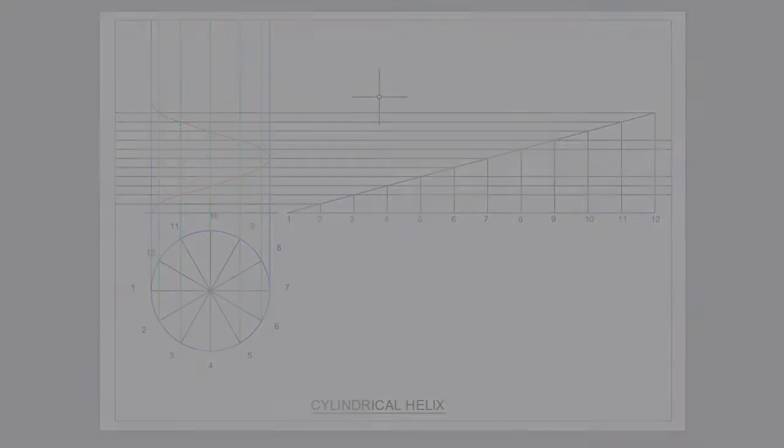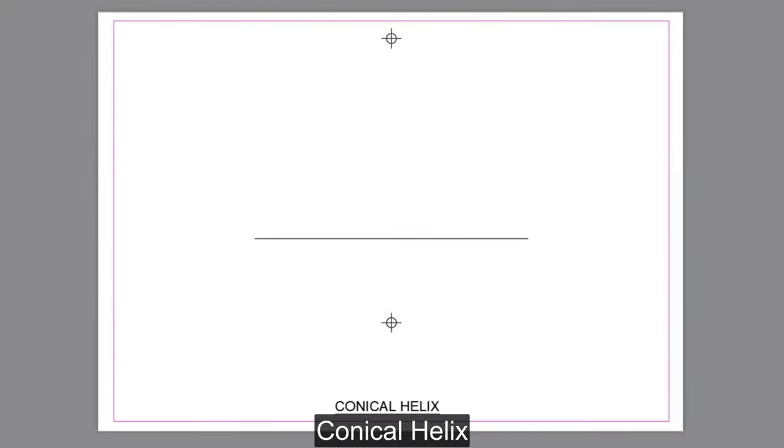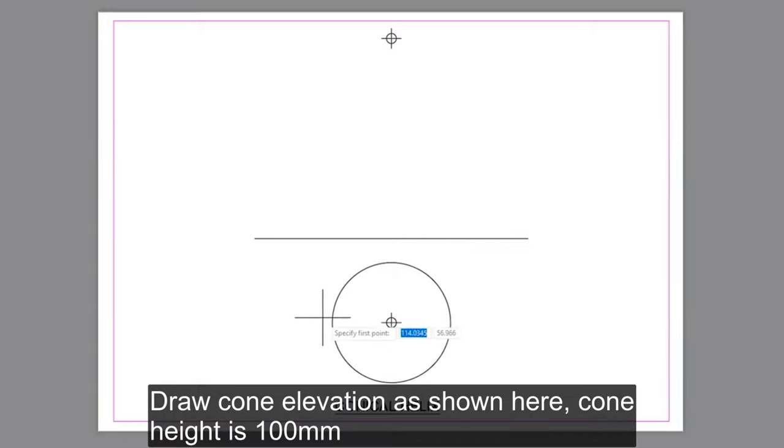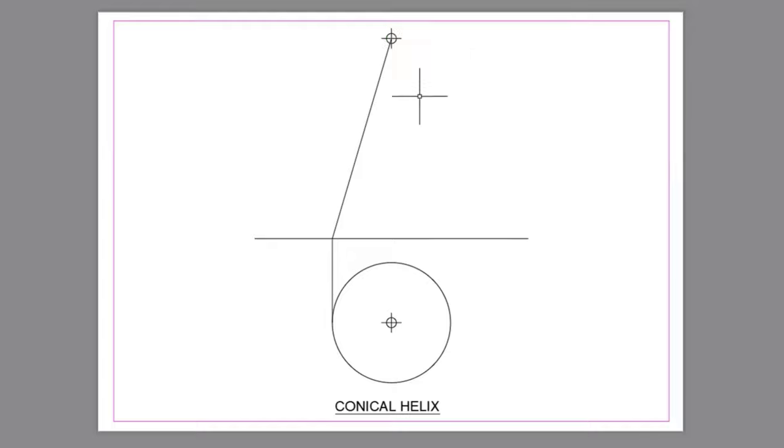Next is conical helix. Draw 30 mm radius circle. Draw cone elevation as shown here. Cone height is 100 mm.